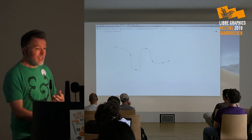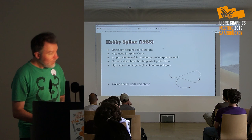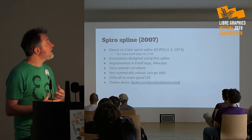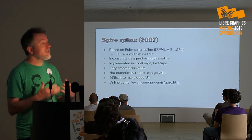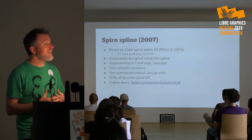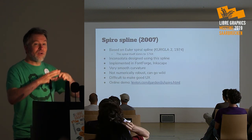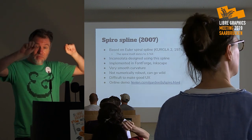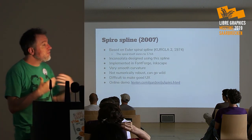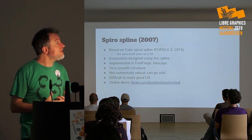I think the Hobby spline is very interesting, but it's still perhaps not the ideal spline. Another spline in the literature is the spiral spline, which I did in 2007, based on the Euler spiral. When I came up with it I hadn't done a full literature search, and I found that this Kurgle project is from the Norwegian shipbuilding institute. Traditionally in shipbuilding you bend a flexible wooden strip and constrain it to where it needs to go to draw a smooth line, and they were looking for the computer equivalent of that.